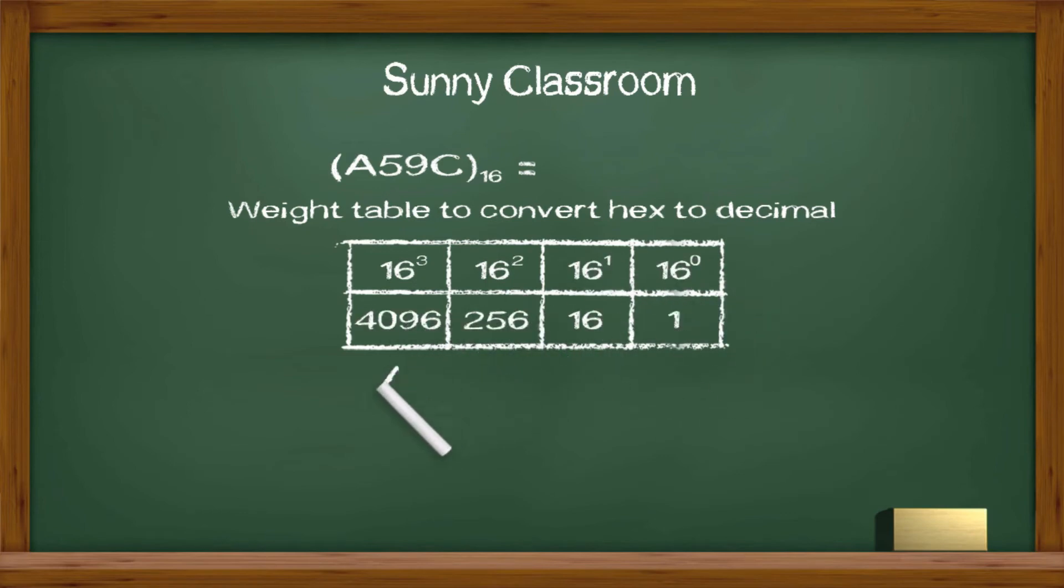We write down A59C under the table making sure they match their positions. Change hex digit to decimal values. A is 10 in decimal and C is 12 in decimal and we don't change 5 and 9 because they are the same.